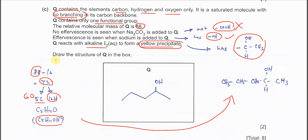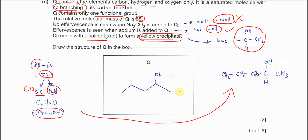If you want to draw the skeleton, you just draw like this. CH3-CH2-CH2-CH2-CH(OH)-CH3. This is Q. That's all for this question. Thank you.